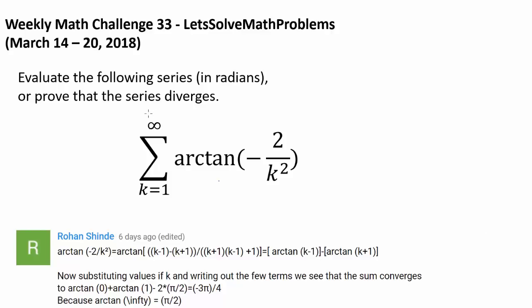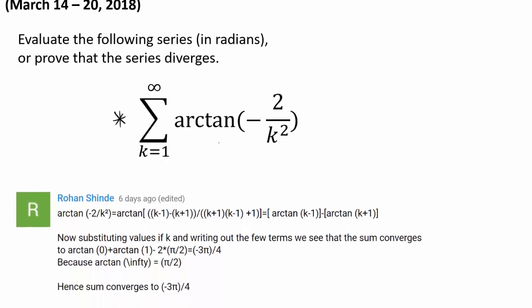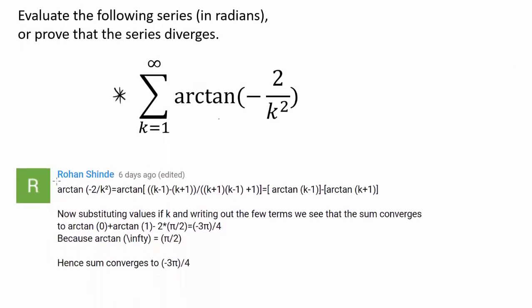Let's try to evaluate the series from weekly math challenge 33: the summation from k equals 1 to infinity of arctangent of negative 2 over k squared. I want to recognize Rohan Shind for being the very first person to correctly answer this question with the answer of negative 3 pi over 4.